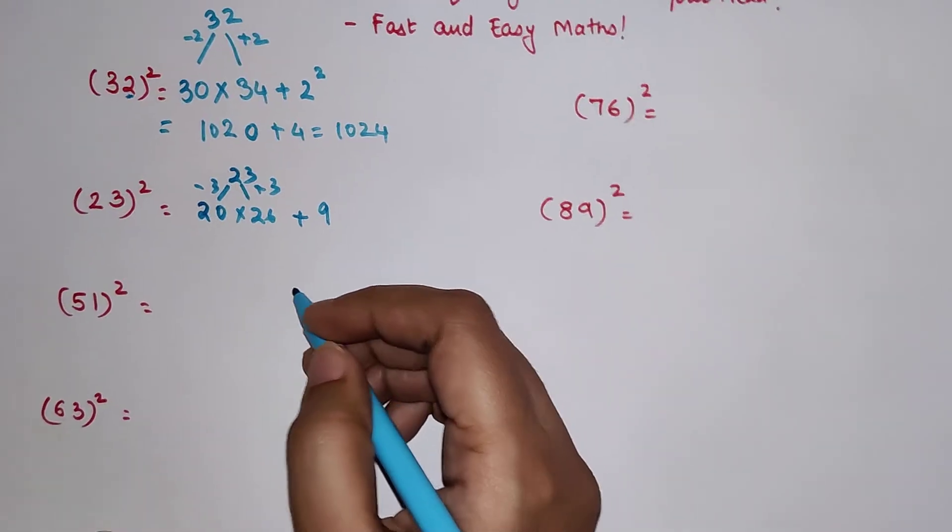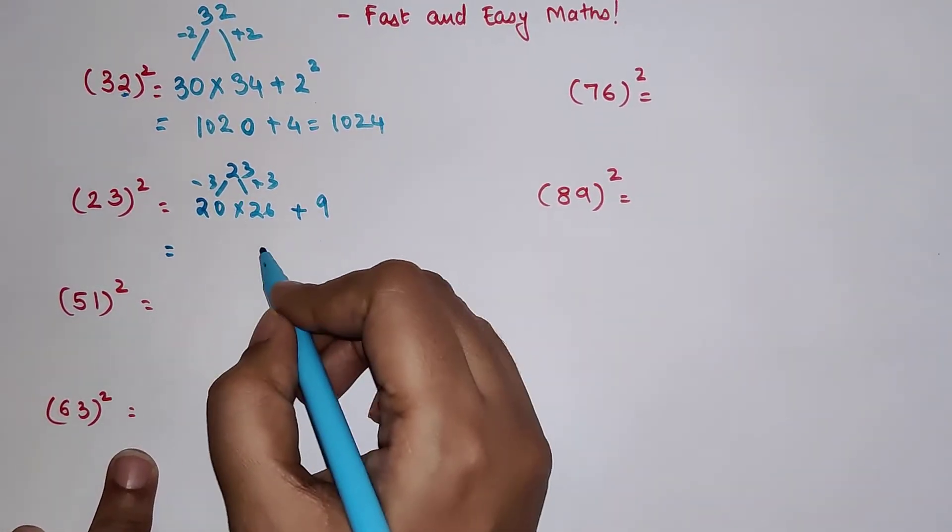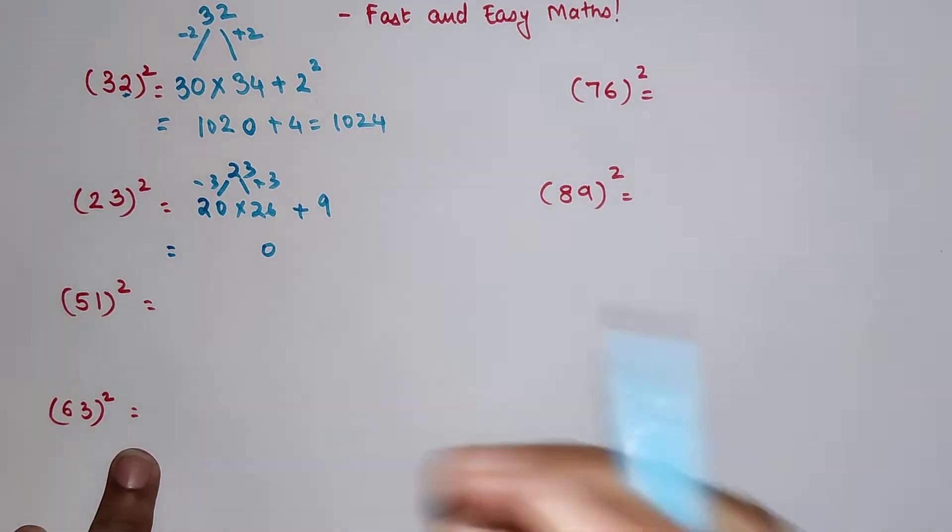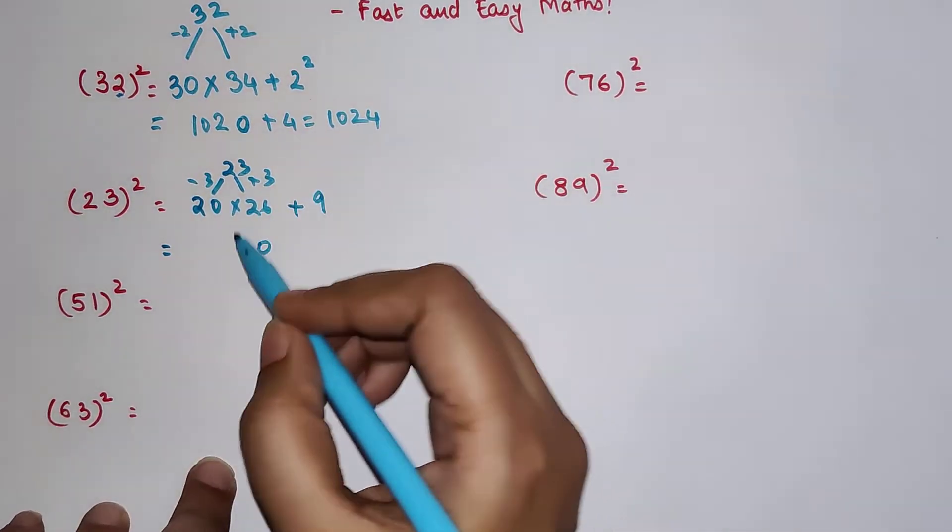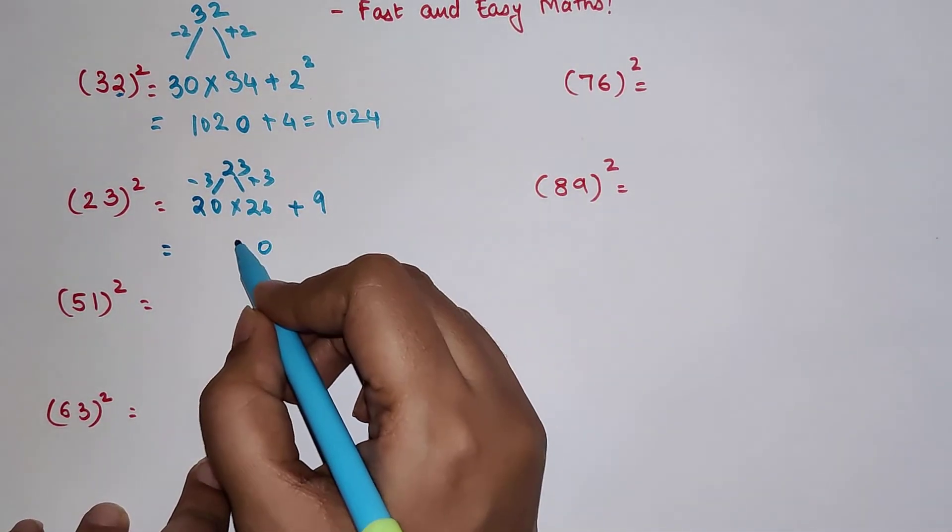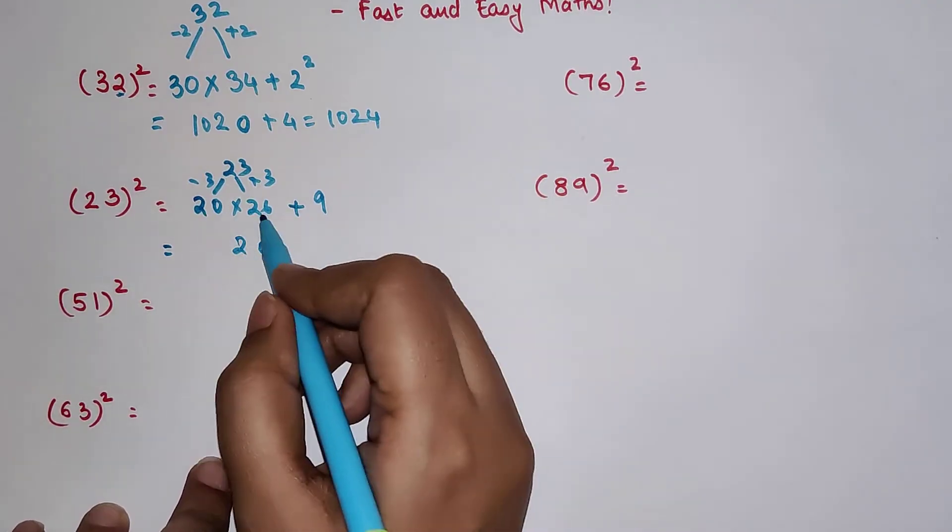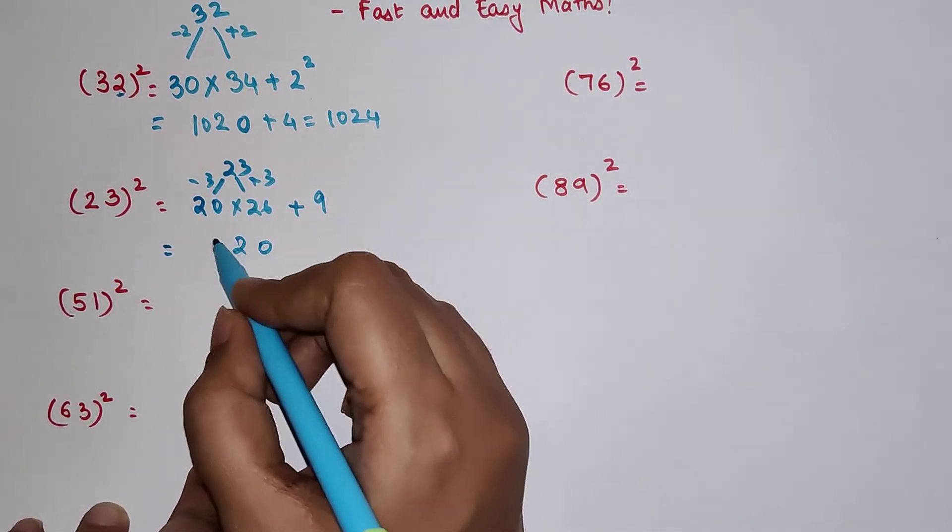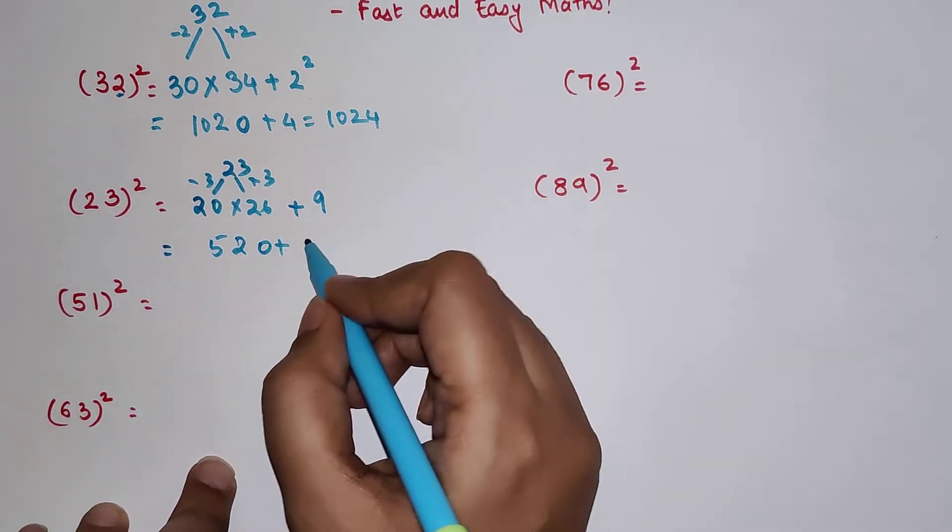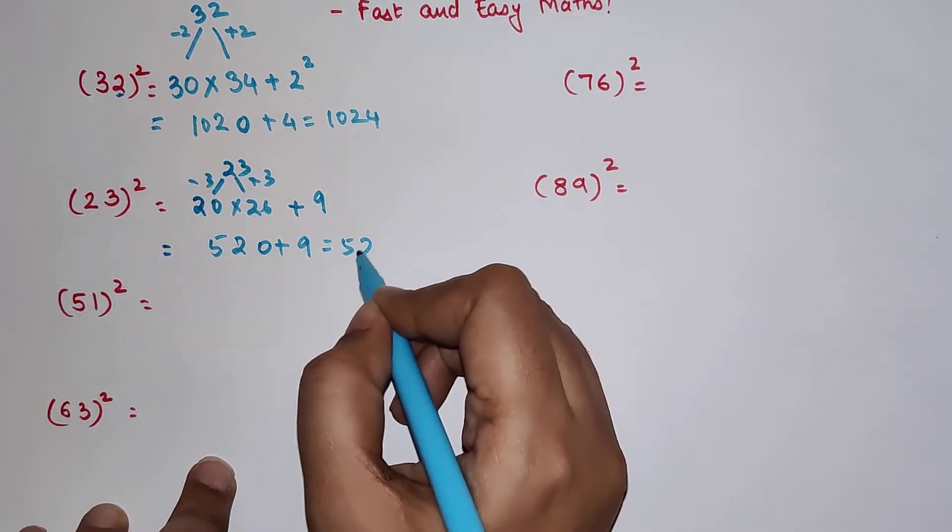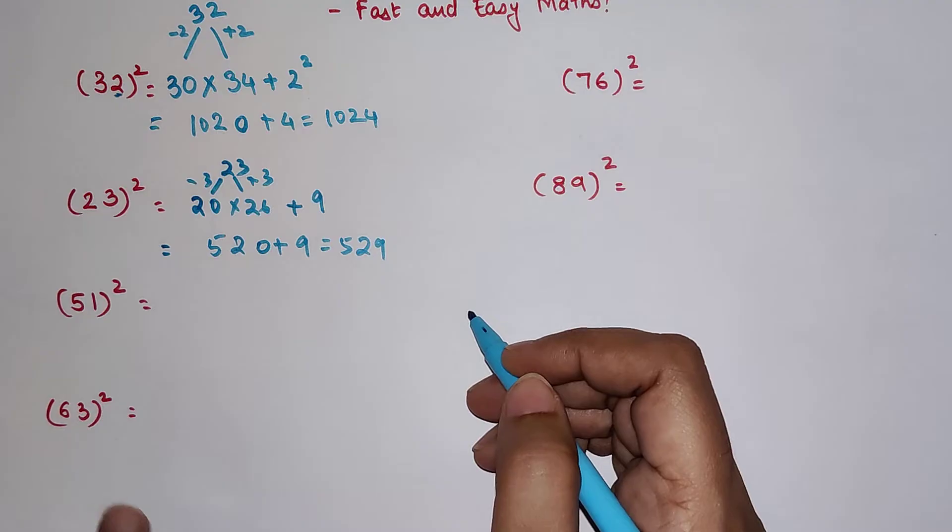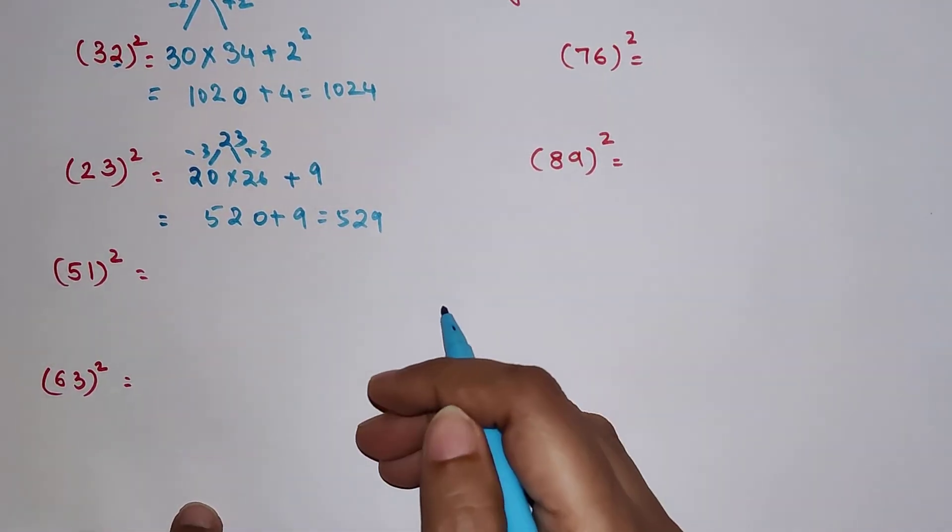We simply multiply these two and we're going to add 3 square which is 9. So 0 is written ahead, 2 times 6 gets you 12, 1 gets carried, 2 times 2 gets you 4 plus 1 gets you 5. 520 plus 9 gets you 529.